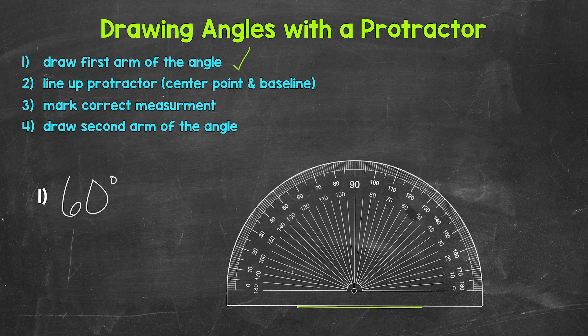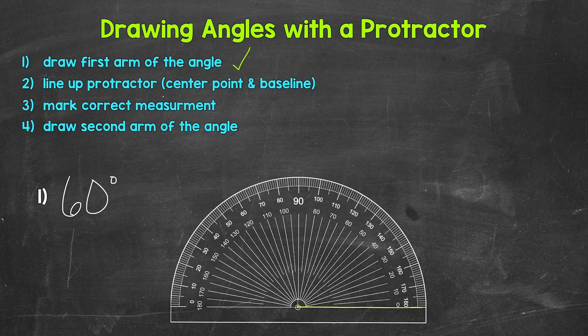Next, our second step: we need to line our protractor up. The center point needs to be on the end of the arm where we made the dot, and the baseline needs to be lined up with the arm. The baseline is zero degrees — that line at the bottom of the protractor that goes through the center point — so line that up on the arm.